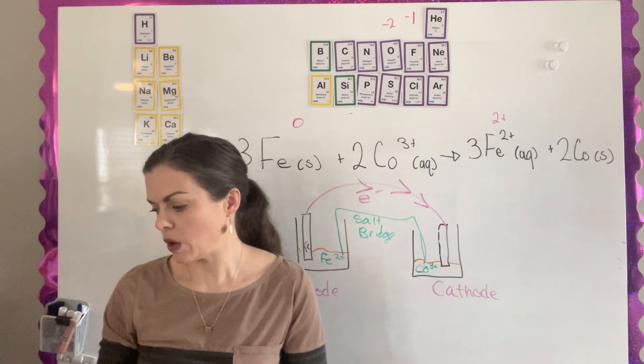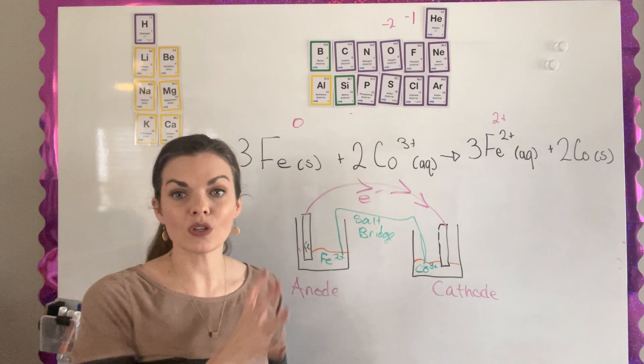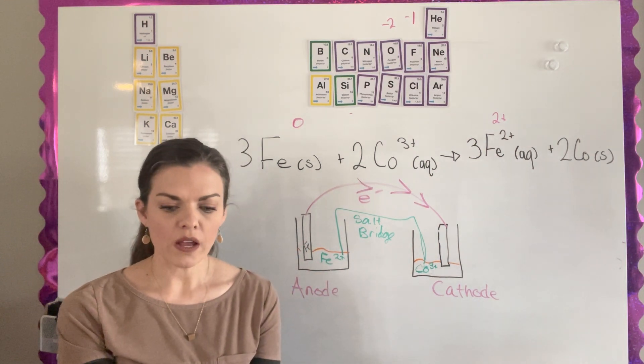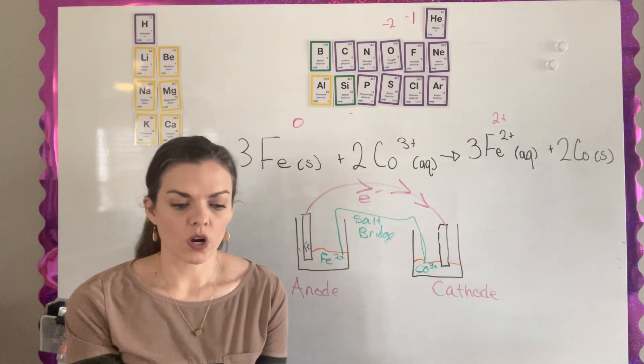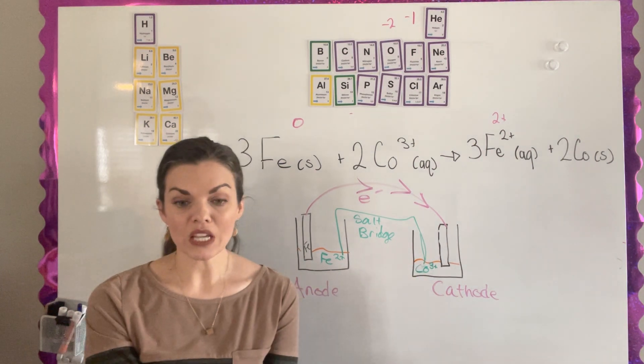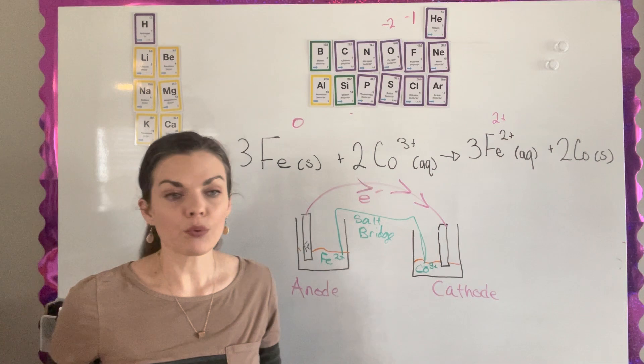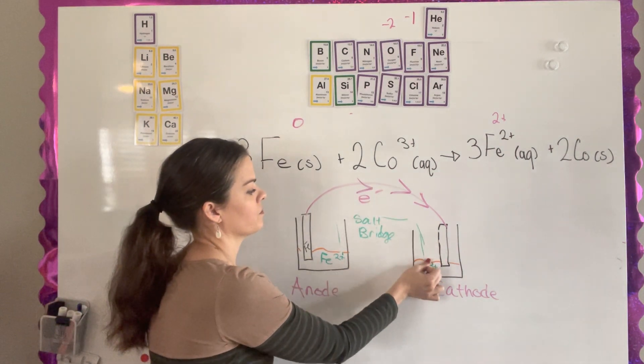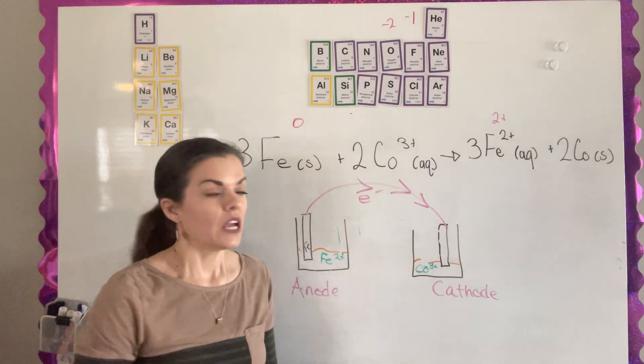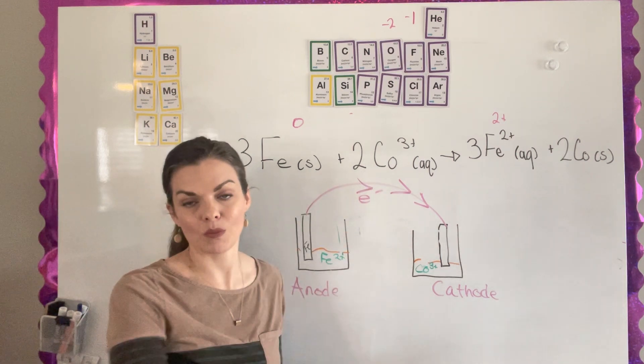I skipped question number five, but we'll go back to question number five because question number five says that a student makes one of these galvanic cells and it's running really well for a while, but it stops to work. There's plenty, there's enough reactants on each side of the cell and it asks what would probably happen. Well, the likely problem is that you didn't put your salt bridge here. And so it works really well for a while until you have such a buildup of electrons that it cannot keep pushing them over.